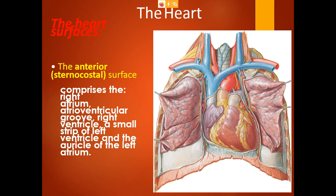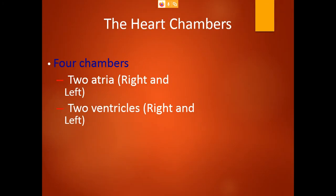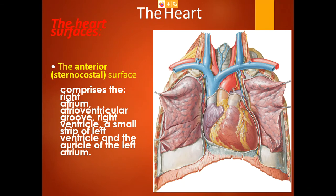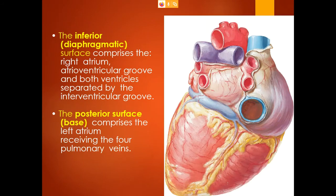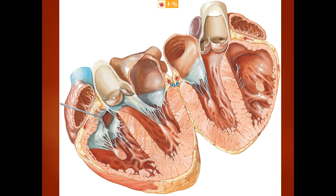The anterior or sternocostal surface of the heart is also called the sternocostal surface. The inferior surface is also called the diaphragmatic surface, which is formed by the right atrium, atrioventricular groove, and both ventricles resting on the diaphragm muscle. The posterior surface or base is where we can identify the pulmonary veins. So the surfaces of the heart are: anterior surface, inferior surface, and posterior surface or base.